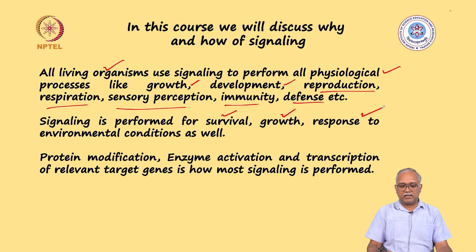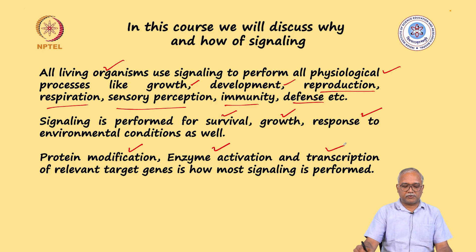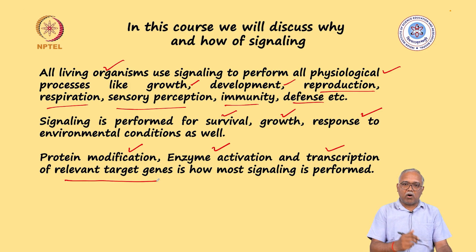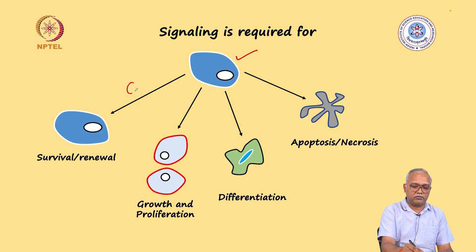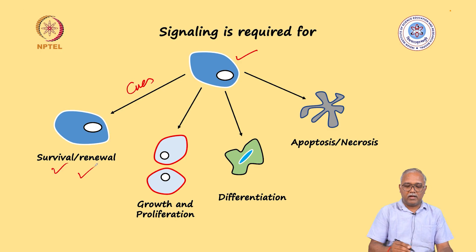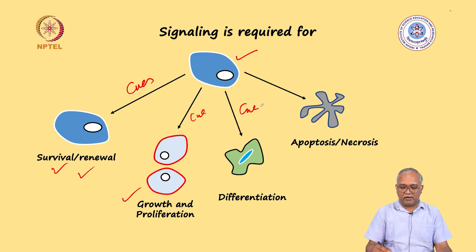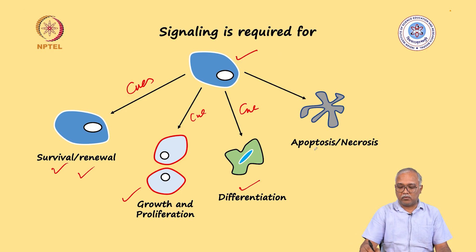What is at the crux of all this signaling is that there are some protein modifications, there are some enzyme activations, and there is transcription of certain target genes — which is most commonly seen in all signaling events happening across strata of different life forms. In a nutshell, cell signaling is where a cell might get cues for survival and renewal, growth and proliferation, differentiation, or at some points the cell undergoes death in a very programmed manner — which is apoptosis or necrosis.